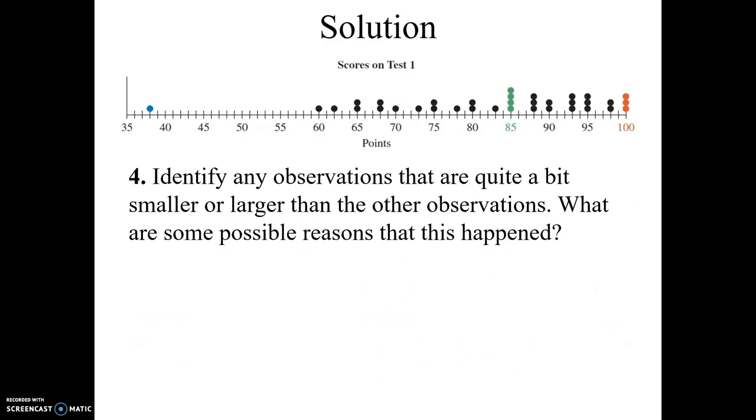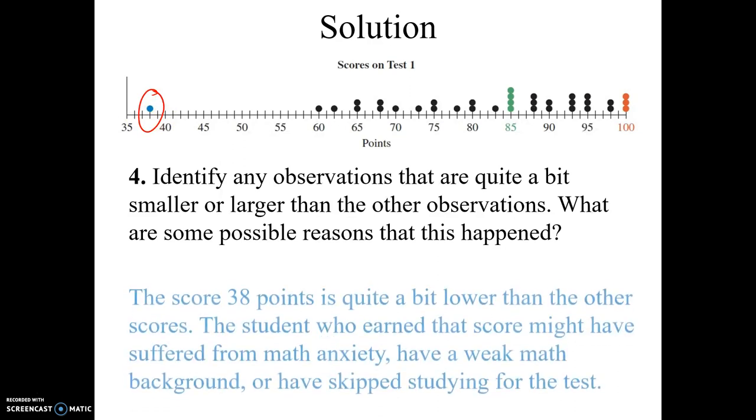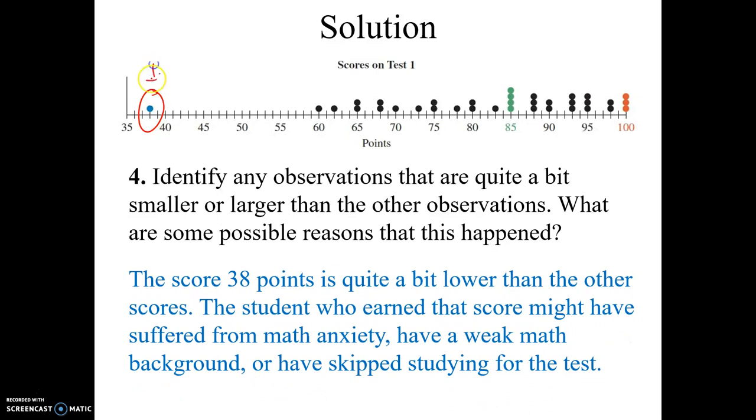Identify any observations that are quite a bit smaller or larger than the other observations. So all these observations seem to be kind of in the same interval. However, this observation is way below all the other ones. So the score, whoever scored a 38%, this is called an outlier.